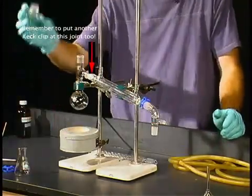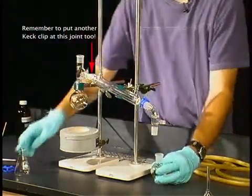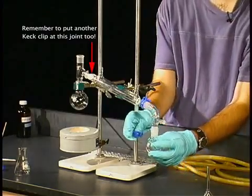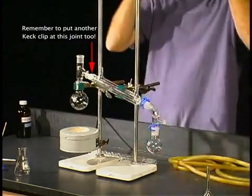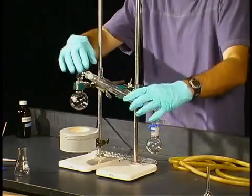I'm going to use a round bottom flask as our receiving flask. We just add it in there and we can add a keck clip to secure it.